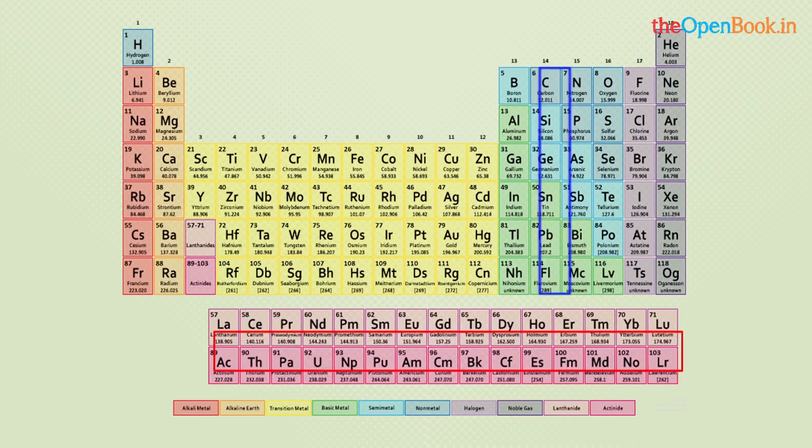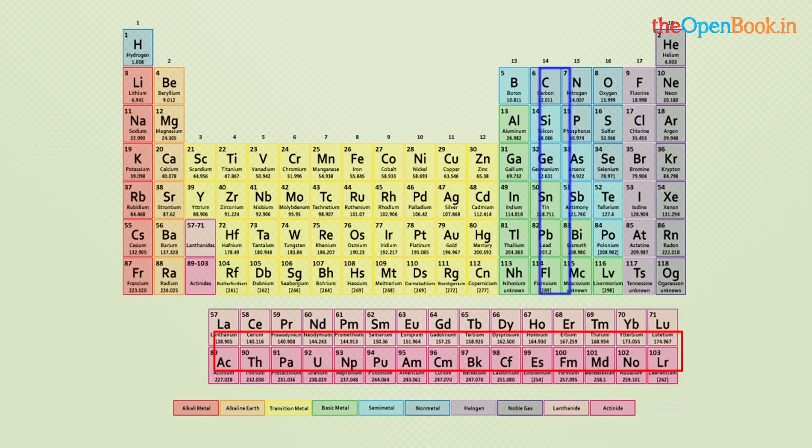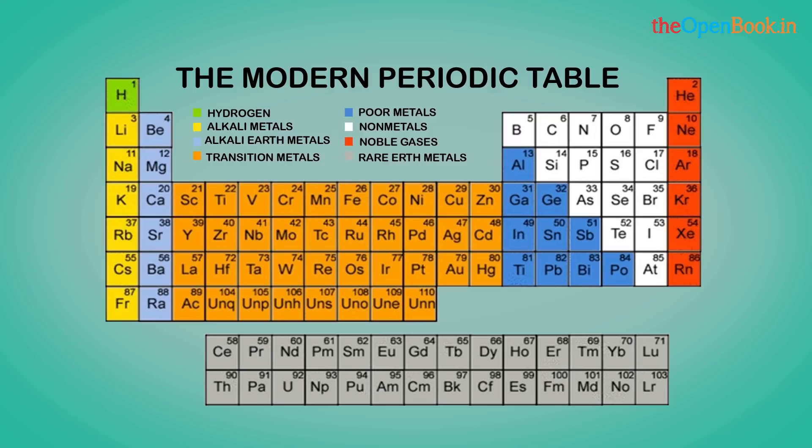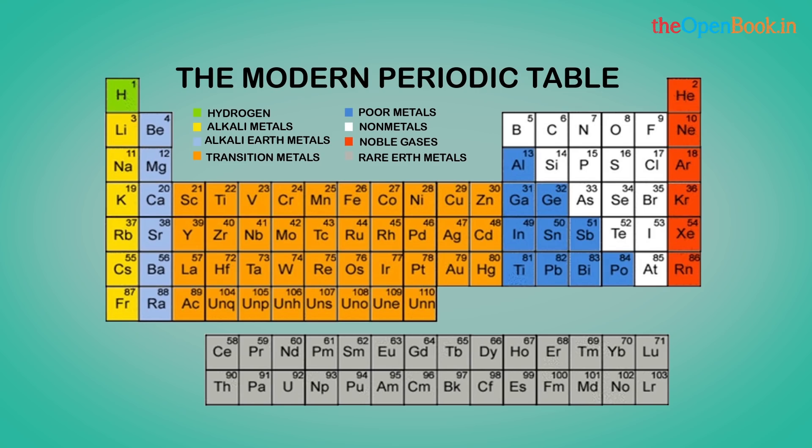Moseley modified the periodic table and stated that the basis of classification of elements should be according to increasing atomic numbers and not atomic weights, since physical and chemical properties of elements depend on the number of electrons and their arrangement. The modern periodic law states that physical and chemical properties of elements are periodic functions of their atomic numbers.